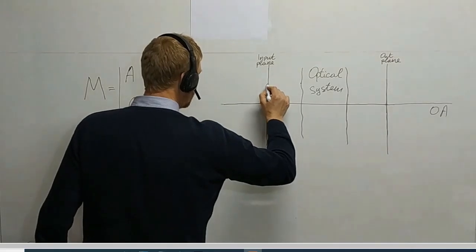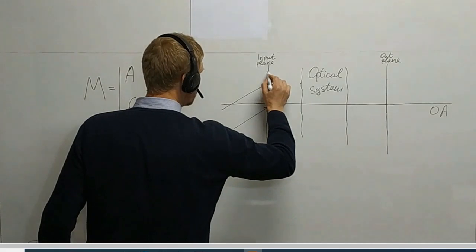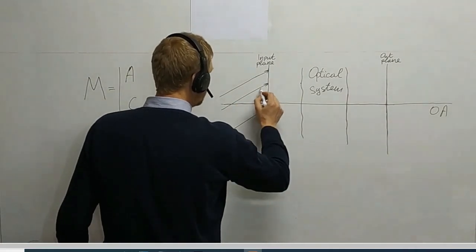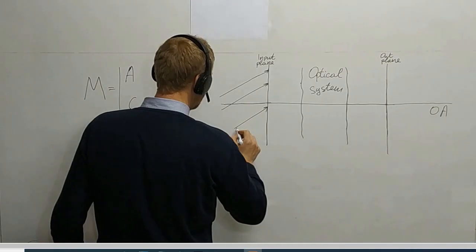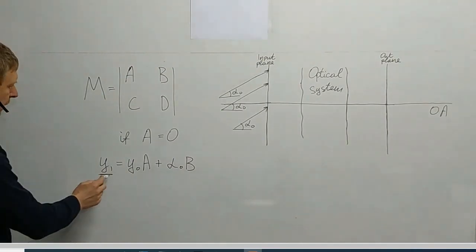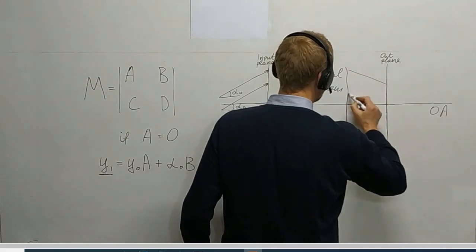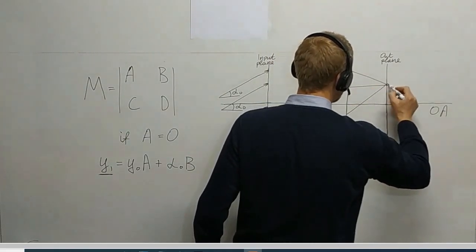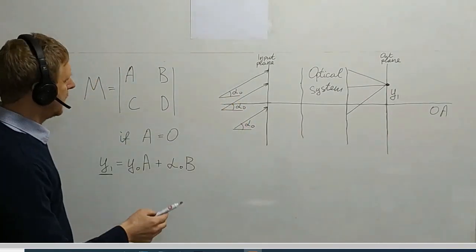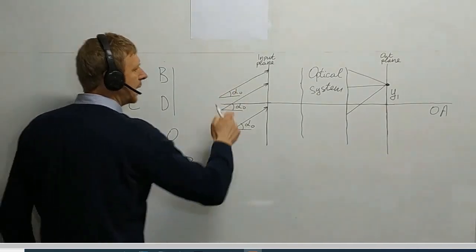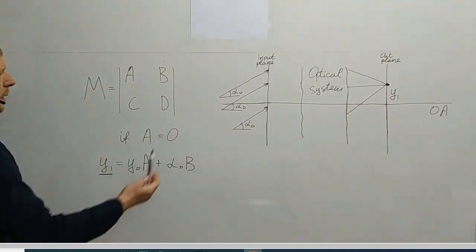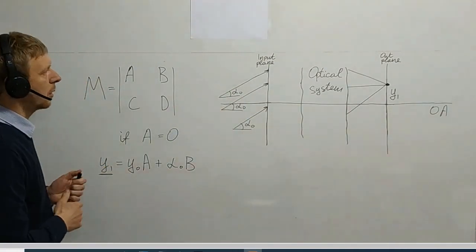If element A of the ray transfer matrix equals zero, the height of the ray in the output plane will not depend on the height in the input plane — it will depend only on alpha, the angle the ray makes with the optical axis at the input plane. This means if I send parallel rays to the optical system, independently of their height, as long as alpha_0 is the same for all of them, they will all arrive at the same position y1 in the output plane. This means the output plane is the focal plane.